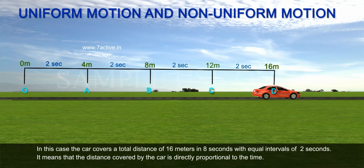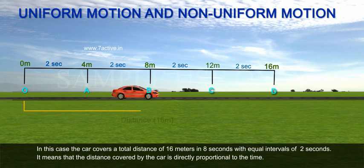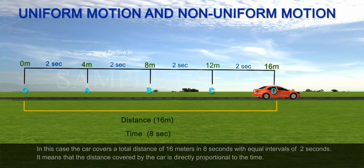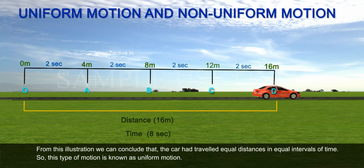In this case, the car covers a total distance of 16 meters in 8 seconds with equal intervals of 2 seconds. It means that the distance covered by the car is directly proportional to the time. From this illustration, we can conclude that the car had travelled equal distances in equal intervals of time. So, this type of motion is known as uniform motion.